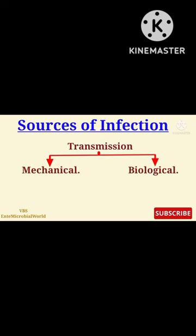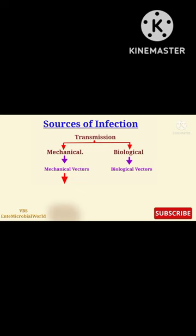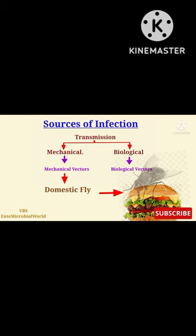Transmission may be mechanical or biological, and the vectors are called mechanical vectors and biological vectors respectively. A good example of a mechanical vector is the domestic fly, which mechanically transmits typhoid bacillus.